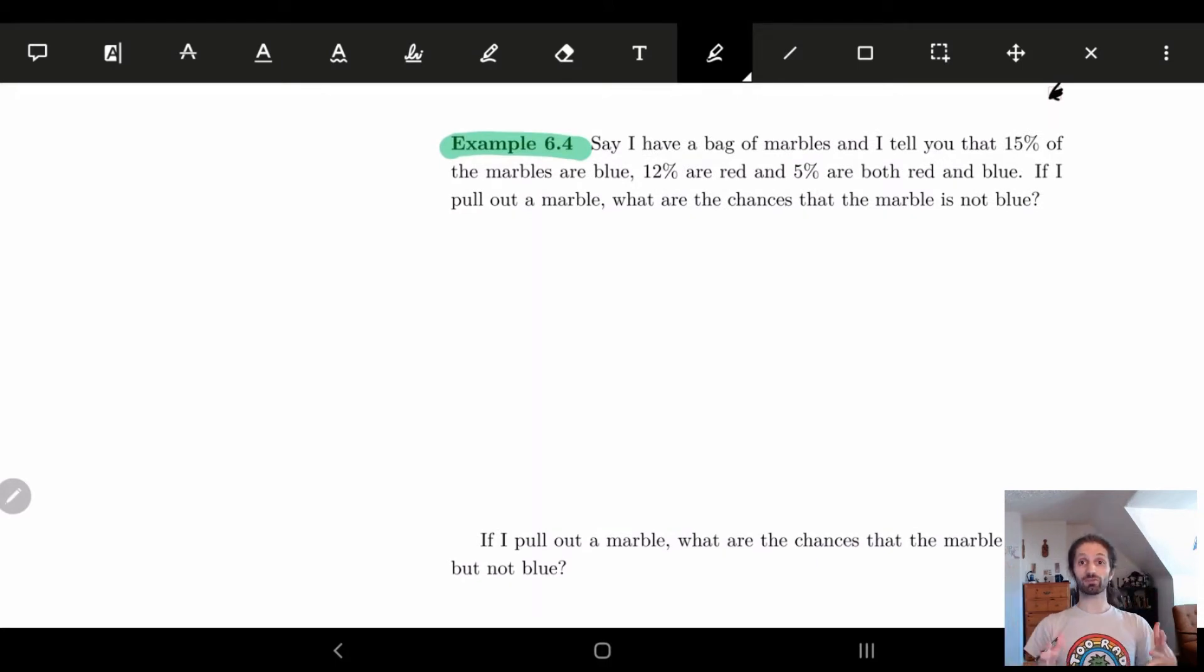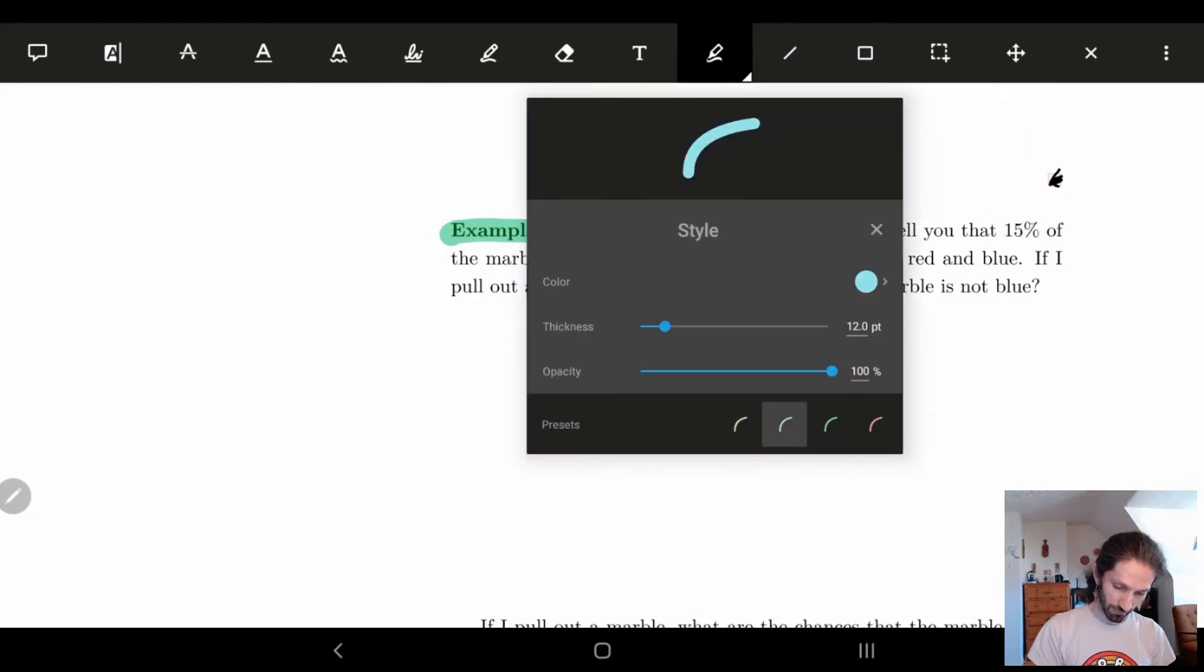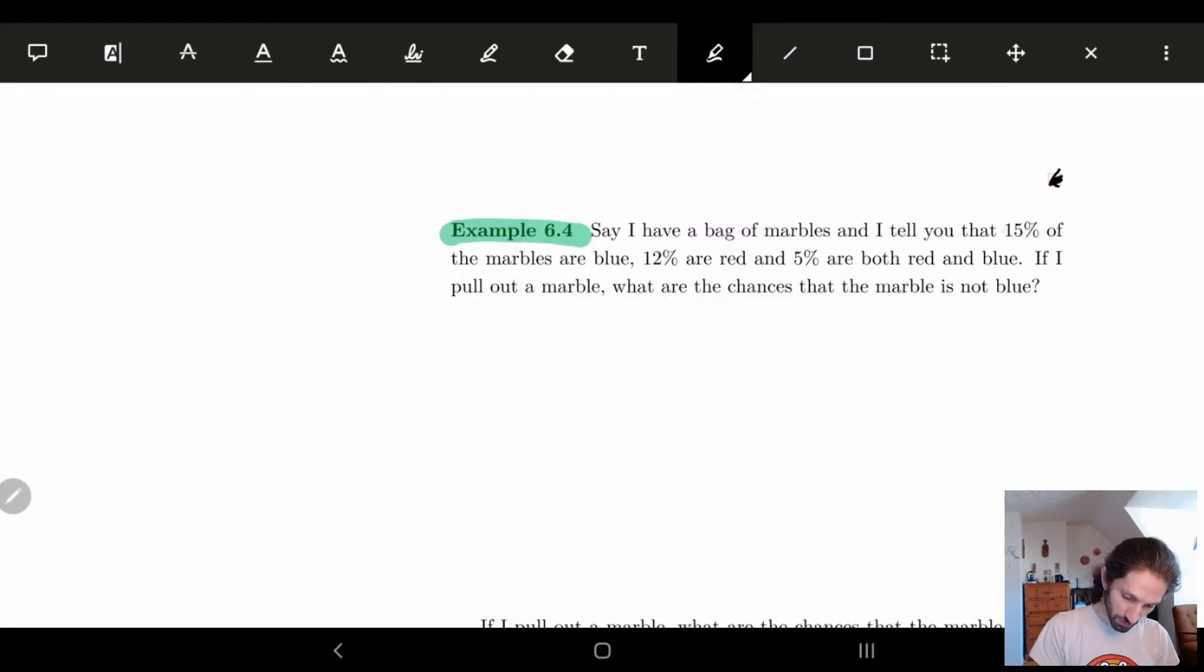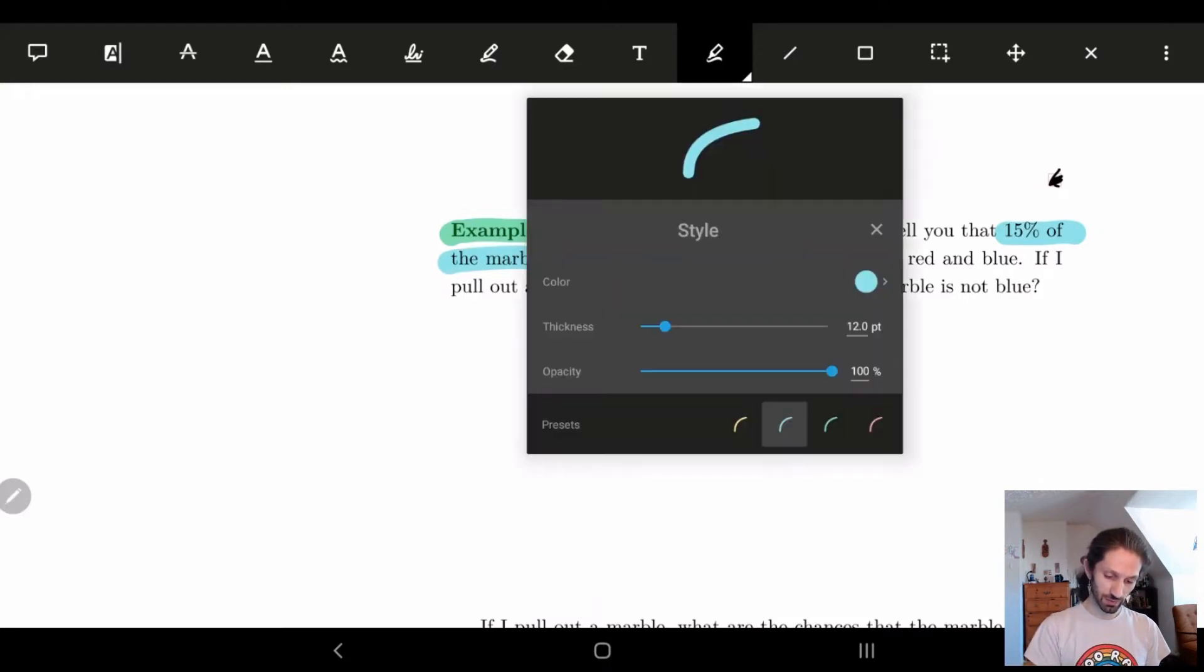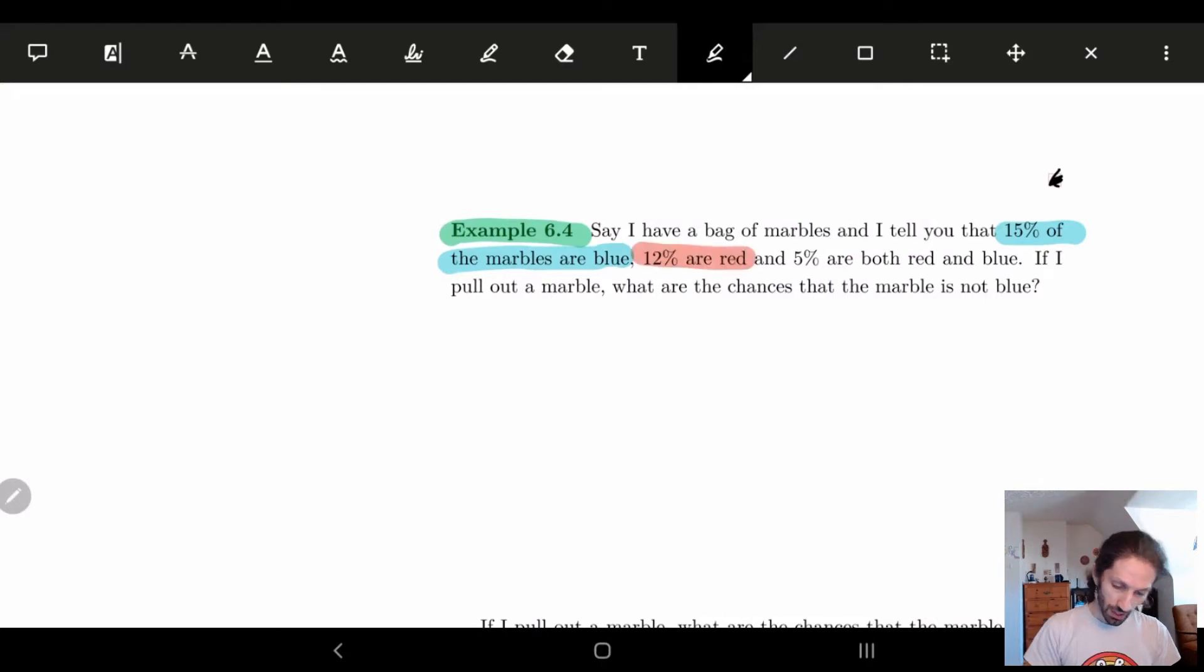So I'm going to start off with a bag of marbles. And what I'm going to tell you is in this bag 15% of the marbles are blue. So 15% of the marbles are blue. 12% we're going to say are red. So let's make them red. And then 5% are both blue and red. So we will make them, let's see if this adds up, purple. They're blue and red. There we go.